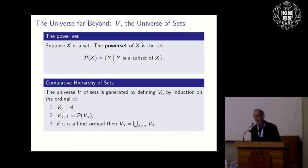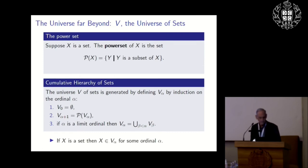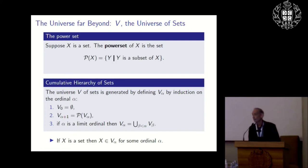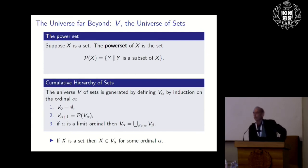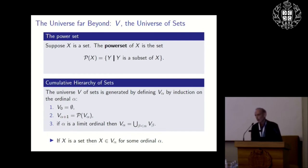Based on this conception you can back out the formal axioms — that's the modern view, though not how it was done historically. If X is a set, X belongs to V-alpha for some alpha; that's part of the conception and becomes an axiom. The universe of sets, a vast and mysterious place, is nicely layered. So if you want to understand it, why not just go level by level?